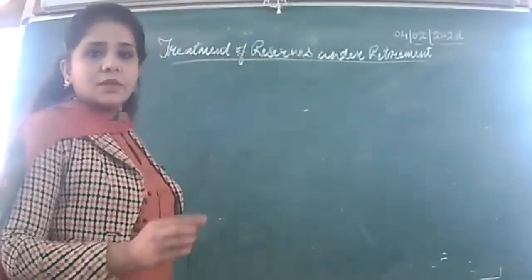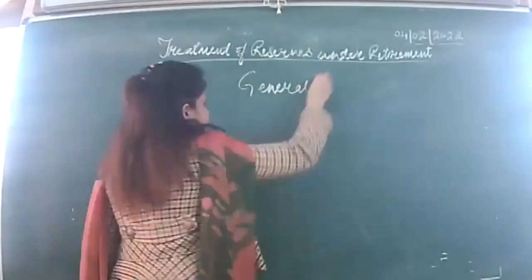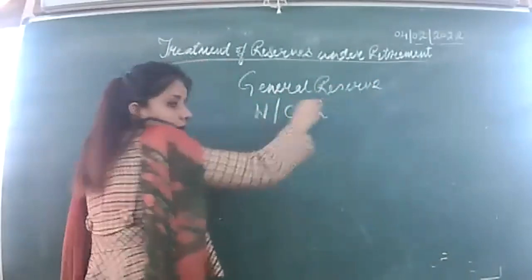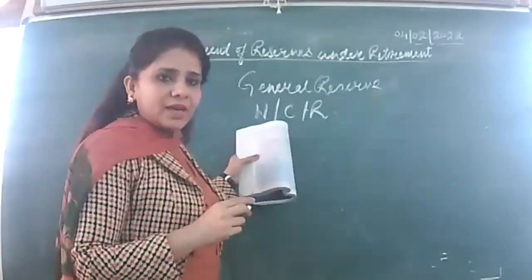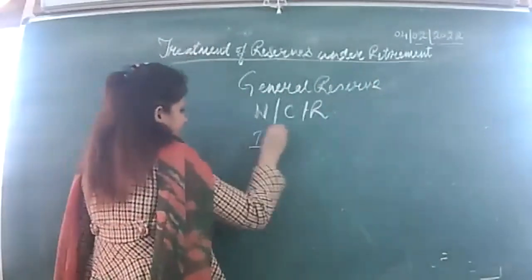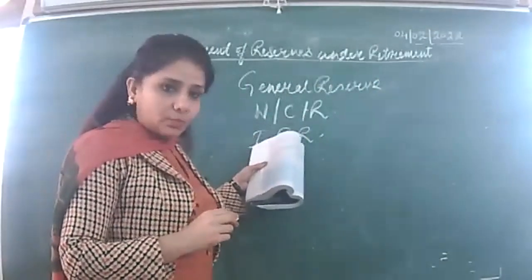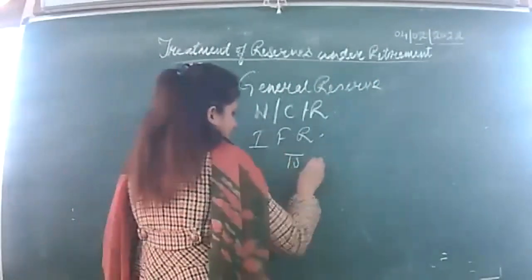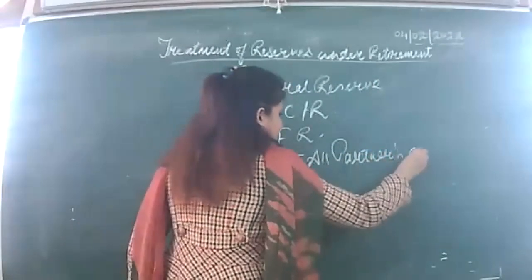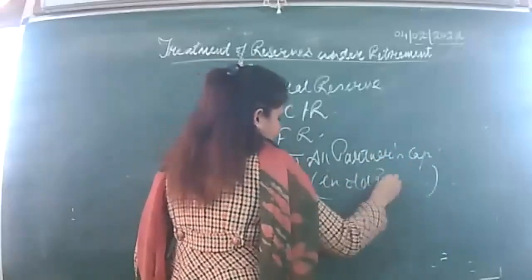For adjustment or treatment of reserves at the time of retirement: reserves can be your general reserve — you will be distributing it if it appears in the balance sheet. If workmen compensation reserve is there and unutilized, similarly IFR — we will be dividing it among all partners including the retiring partner, in their old ratio. Keep this entry in mind.